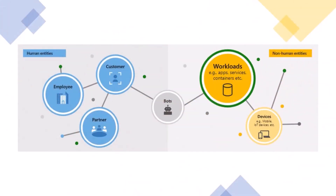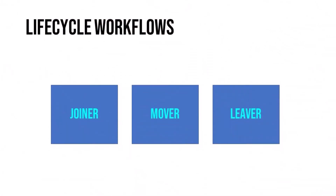There are also two other products that fall under the Entra product family: Workload Identities and Lifecycle Workflows. Workload Identities are non-human identities that allow an application or service principal to access a resource. Lifecycle Workflows is a new Azure Active Directory identity governance service that enables organizations to manage Azure AD users by automating the process of handling joiners, movers, and leavers in your system — scheduling tasks based on certain triggers to help automate onboarding, changing, or removing users.